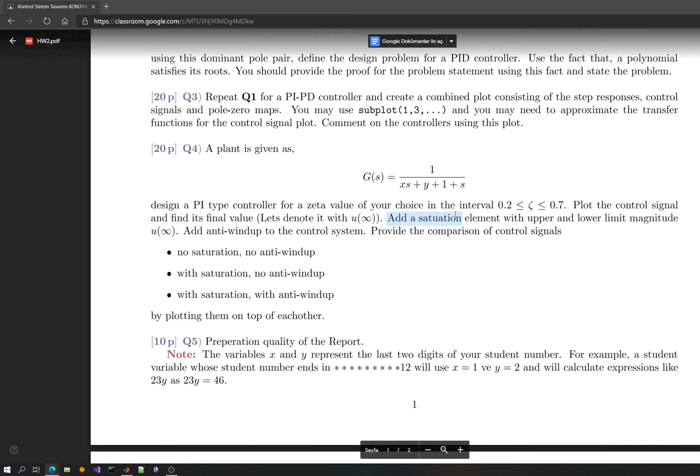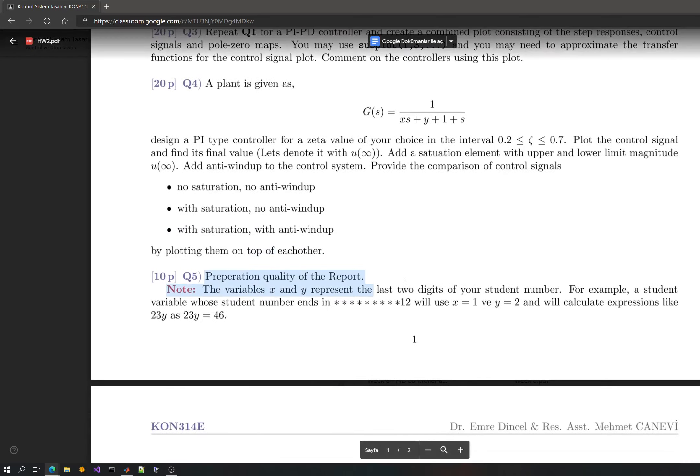Then you will look for the control signal. You will add a saturation element. The upper and lower magnitude will be this steady state value of the control signal. Then the anti-windup should be added. You should compare the no saturation, no anti-windup control signal, the saturated no anti-windup control signal, and the saturated with anti-windup added control signal. Put them on top of each other and maybe add a one line of comments.